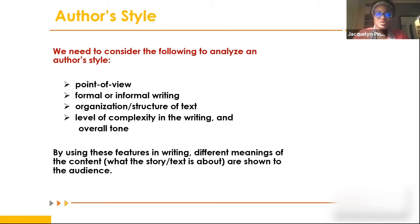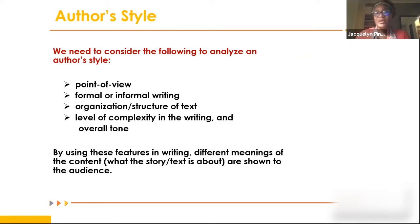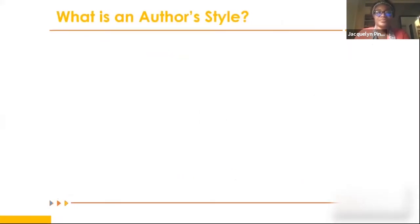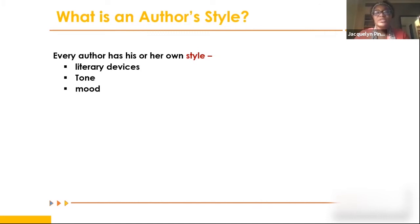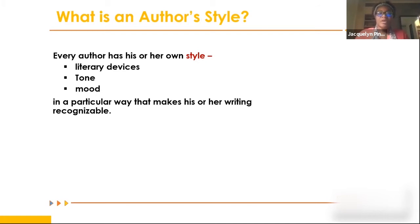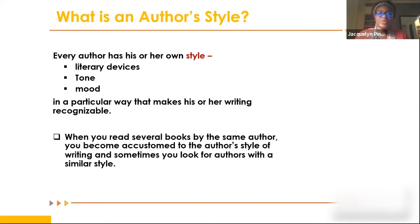By using different features in writing, different meanings of what the story is about are shown to the audience. You can have two authors write about the same thing and get a whole different take on it - even the same event - just because of the author's style. Every author has their own style, using literary devices, tone, and mood in a particular way that makes their writing recognizable.